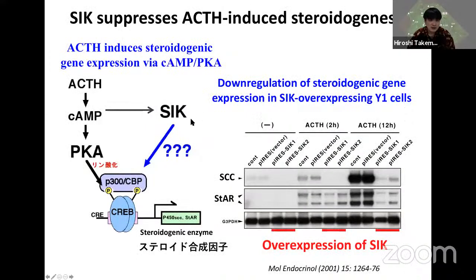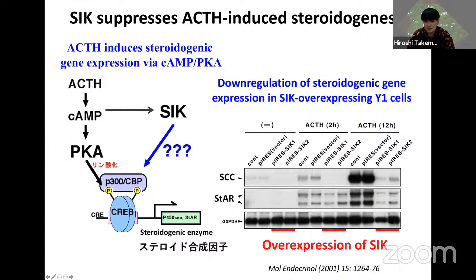What is SIK? SIK is induced by cyclic AMP signaling and may regulate CREB-mediated gene expression. We prepared an overexpression cell line in steroidogenic cells. SCC and StAR are steroidogenic enzymes. When we activate cyclic AMP signaling by ACTH, SIK-overexpressing cells cannot express SCC or StAR. So SIK may inhibit CREB function.